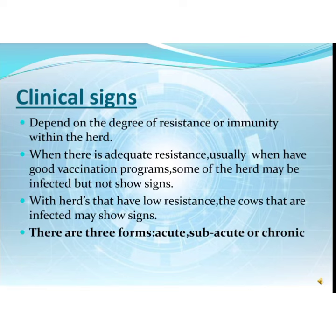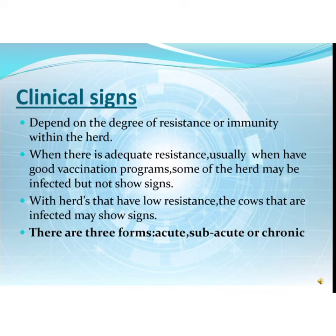Clinical signs of Leptospirosis depend on the degree of resistance or immunity within the herd, or on the organs involved. When there is adequate resistance, usually where there are good vaccination programs, some animals in the herd may be infected but not show signs. Within herds that have low resistance, infected cows may show signs. There are three forms of Leptospirosis: acute, sub-acute, and chronic.